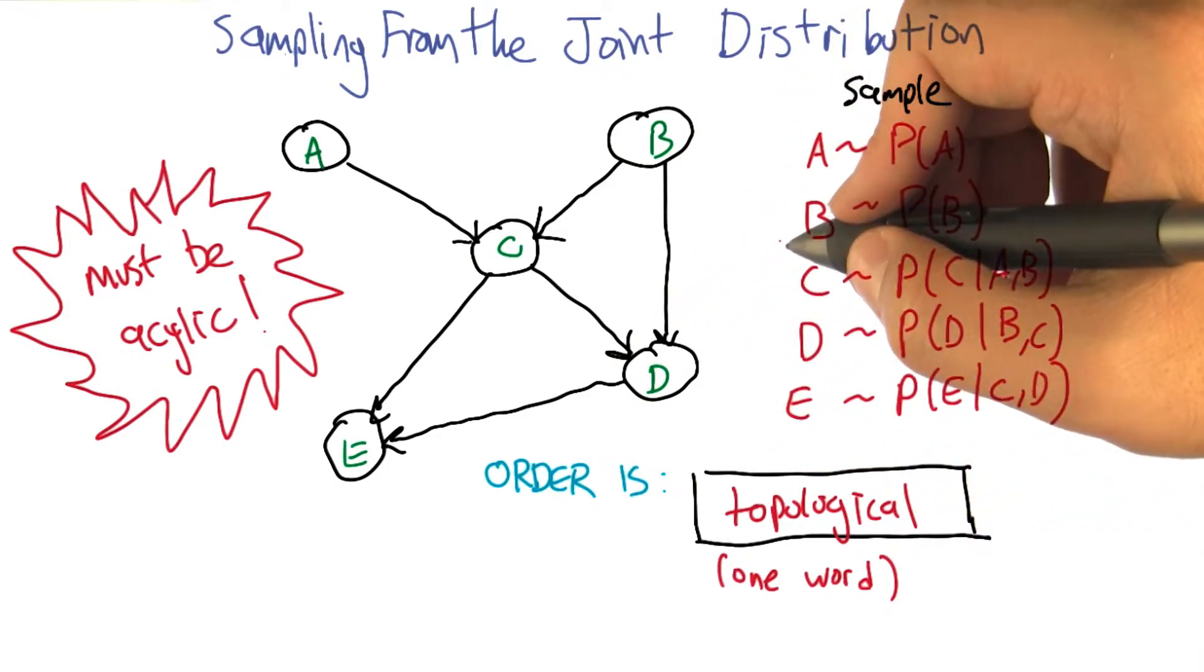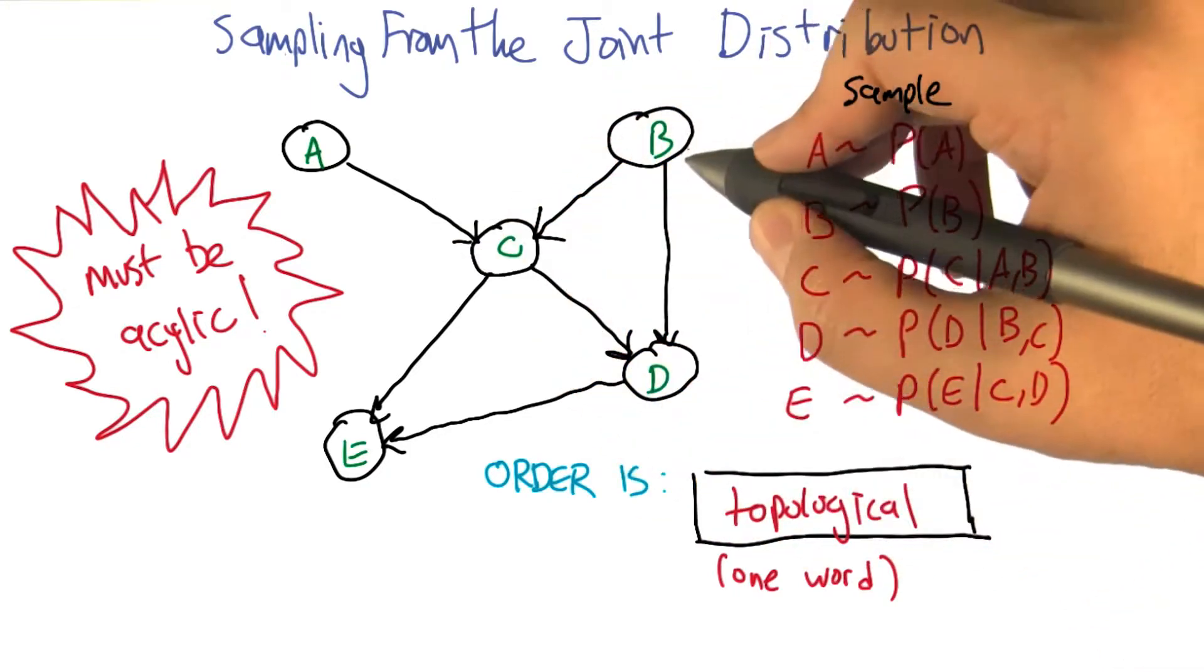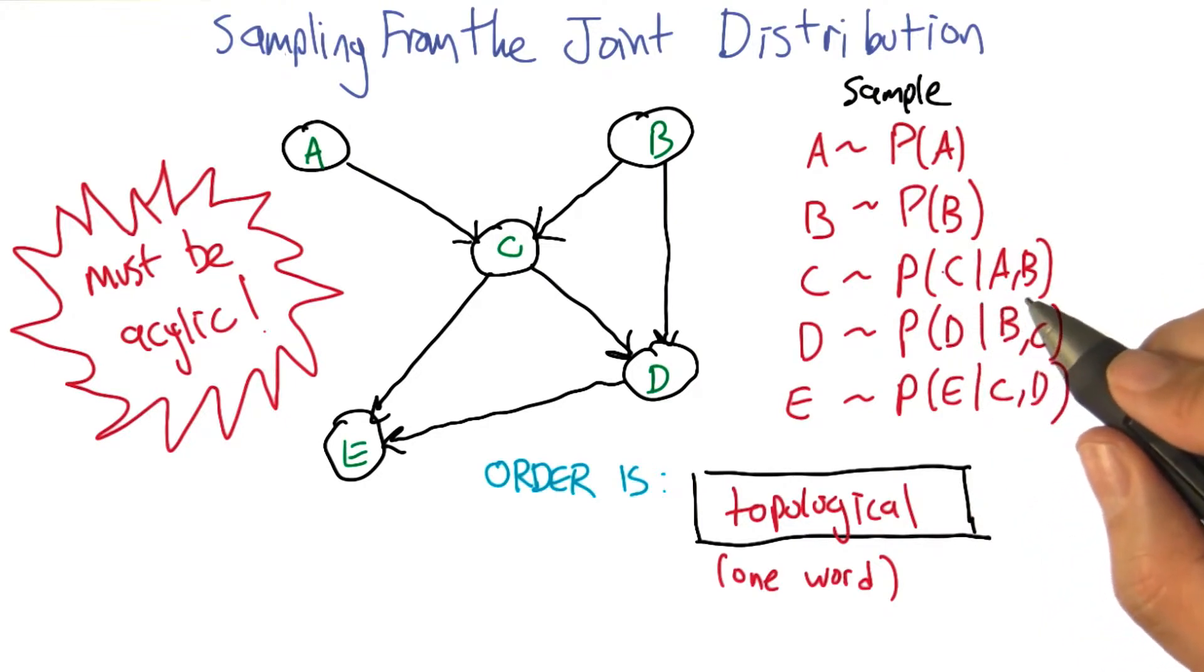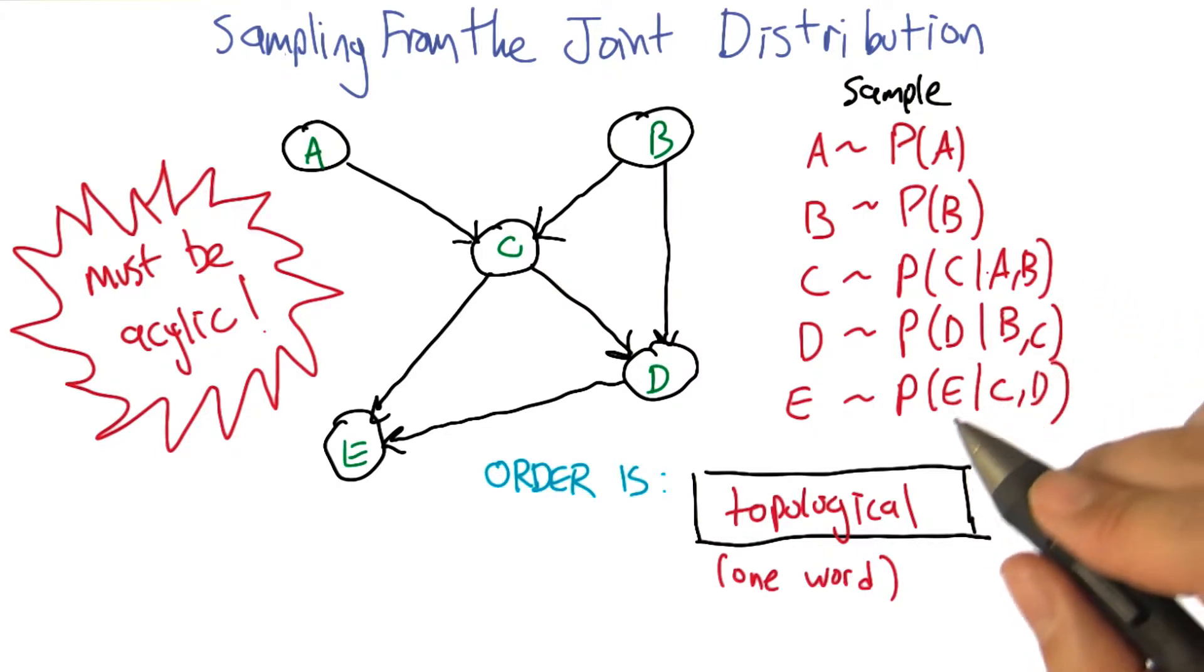Yeah, I mean, there is a family of undirected models. Mm-hm. But we're talking only about the directed ones here. So the directed ones, yeah, it has to be acyclic for the probability distribution to be meaningful. Well, that makes sense. I'm sure we could make something up, but this is typically how it's done. We constrain ourselves to acyclic graphs.